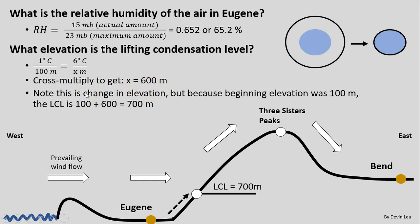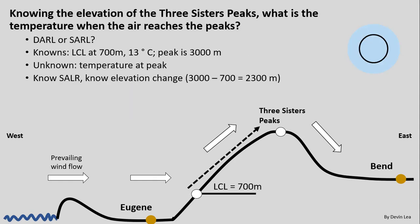Note that 600 meters is not the actual elevation of the lifting condensation level — it is simply our change in elevation. Because we began in Eugene at 100 meters, we add that to this change in elevation. So the lifting condensation level is at 100 + 600 = 700 meters total elevation.